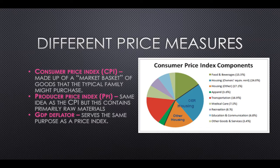There are three main types of price indices that we'll talk about. The main one is the consumer price index. This is the market basket of goods that the typical family might purchase. If you look over here on the right, you see the items that make up the market basket: food and beverage, housing, clothing, transportation, health care, and so on. They take elements from each of these categories, measure the prices from month to month, and this is how they're able to construct a price index.